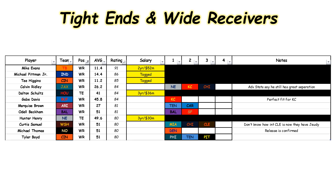Moving on to tight ends and wide receivers. The top three have been either tagged or signed — Mike Evans, Michael Pittman, and Tee Higgins. So the best available as of today, Sunday, would be Calvin Ridley from Jacksonville. Teams interested are the New England Patriots, Kansas City Chiefs, and Chicago Bears in that order. Calvin Ridley's advanced stats show he still has great separation — Trevor Lawrence just had a hard time getting him the football. It does surprise me that Ridley would go to New England over Kansas City. Kansas City is likely looking for a cheaper option like Gabe Davis, who would be a perfect fit and would be higher up in the depth chart there.